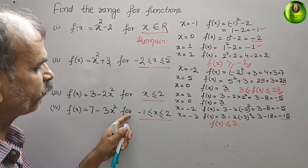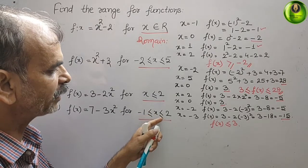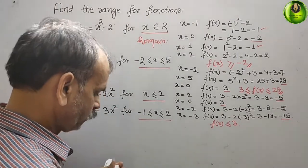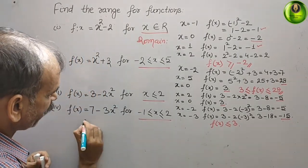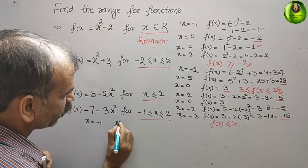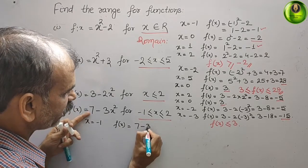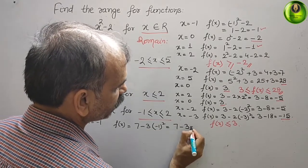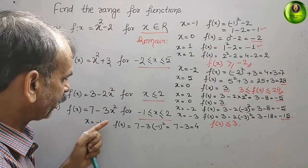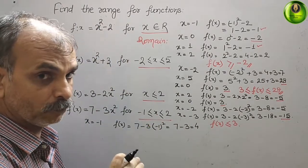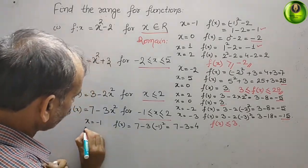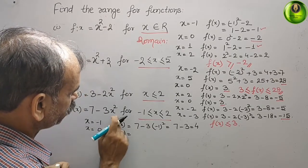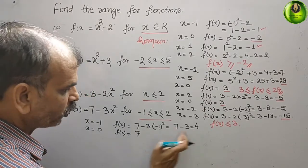Next, f(x) = 7 - 3x² for -1 ≤ x ≤ 2. First take x = -1: f(x) = 7 - 3(-1)² = 7 - 3 = 4. Now take the value in between, x = 0: f(x) = 7 - 3(0) = 7.